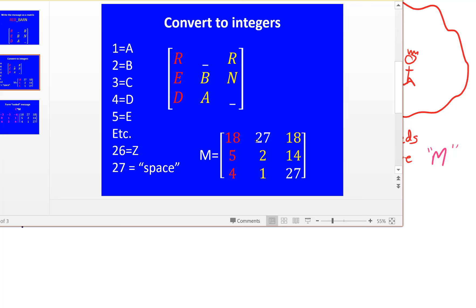So you see there's a space in the first row, second column, and also a 27 representing a space for the third row, third column. Once we've got a matrix of integers, I'm going to call that M, that's our message.